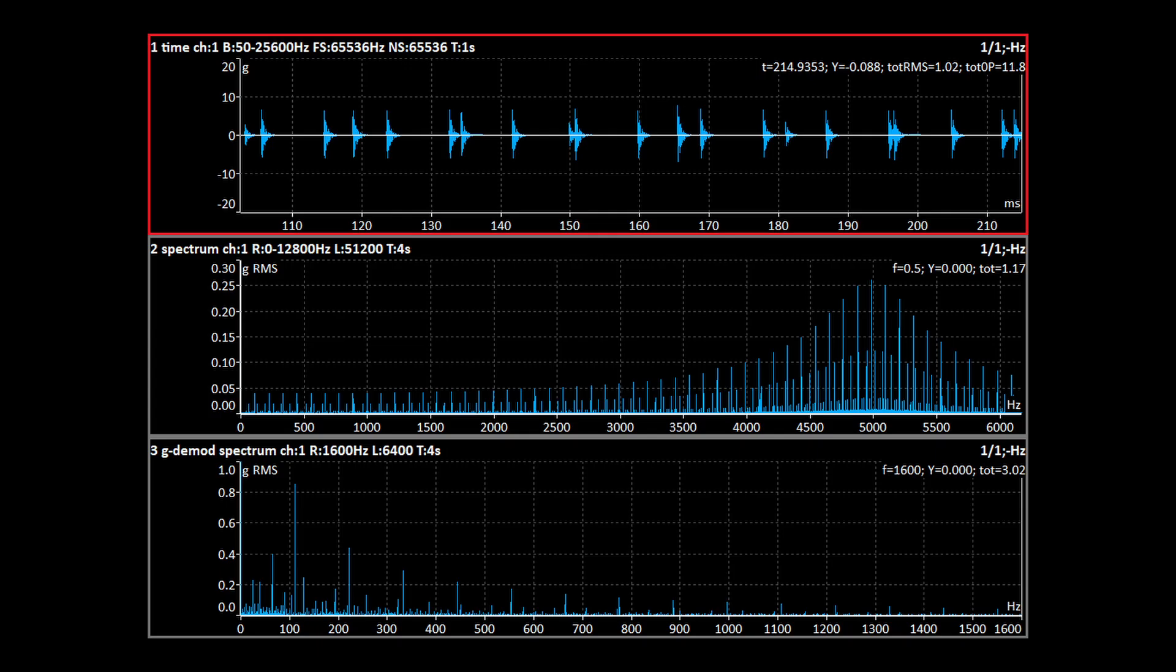Let's look at a measurement of this situation. These are the outer race shocks. Their amplitude is variable due to modulation. These are the inner race shocks, which are all the same. The BPFO and its harmonics in the demodulated spectrum have sidebands as before. The BPFI and its harmonics do not have sidebands.